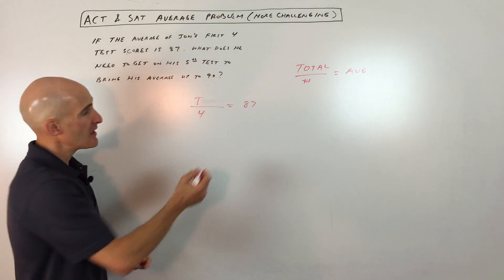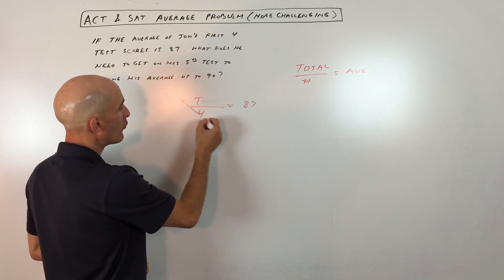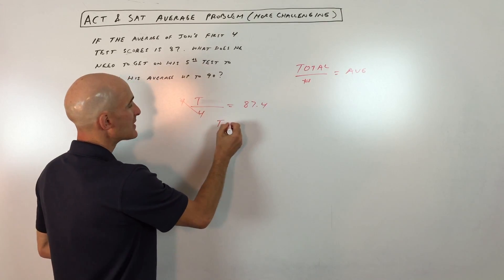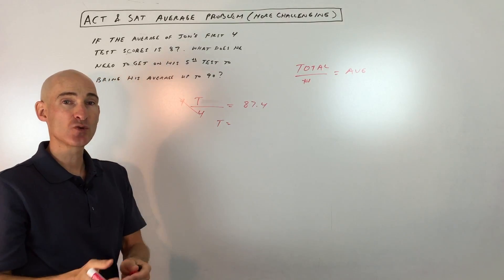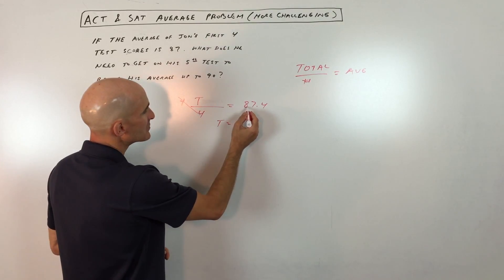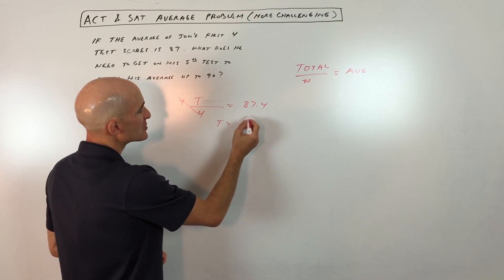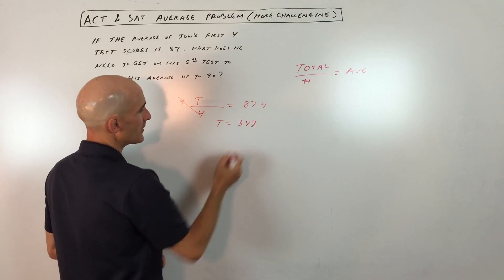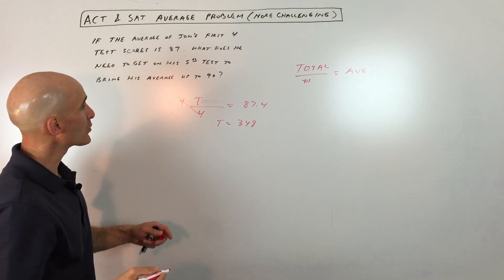What we can do here is multiply both sides by four to find out the total number of points that he scored on those four tests. So that comes out to 320 plus 28, which is 348.